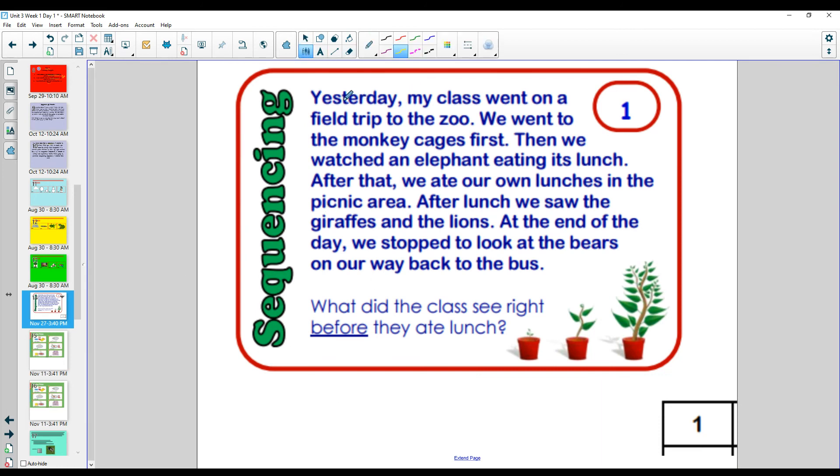Okay, let's look at this text. Yesterday, my class went on a field trip to the zoo. We went to see the monkey cages first. Then, there's another sequence word, we watched an elephant eating its lunch. After that, another sequencing word, we ate our lunches in the picnic area.